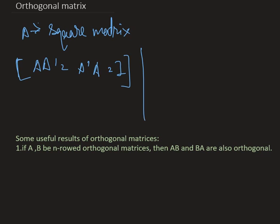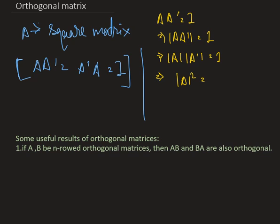If A is an orthogonal matrix, then A times A-transpose equals I. Therefore, the determinant of A times A-transpose equals one, which means determinant of A multiplied by determinant of A-transpose equals one. This implies the determinant of A squared equals one. Since determinant of A and determinant of A-transpose are the same, the determinant of A equals plus or minus one.